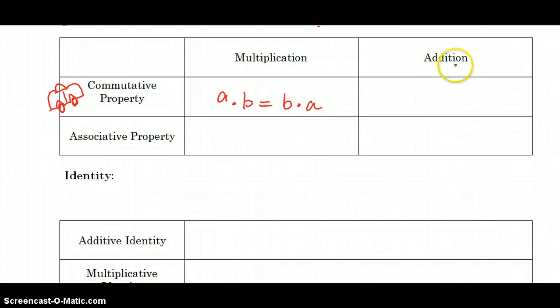With addition, it's very similar, except instead of multiplying, we're going to add: A plus B equals B plus A. And if you put numbers in for those variables, you'll know they'll always be true. It doesn't matter if you say A plus B or B plus A. Either order gives us the same result.